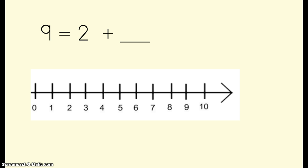Let's look at this problem. 9 equals 2 plus what? I need to figure out our unknown addend that goes in this spot. 2 plus what equals 9? Well, I'm going to start on the number 2 because that's an addend I know. And I'm going to hop till I get to the number 9 because that's my whole or my sum. Let's count how many hops it takes to get from 2 to 9.